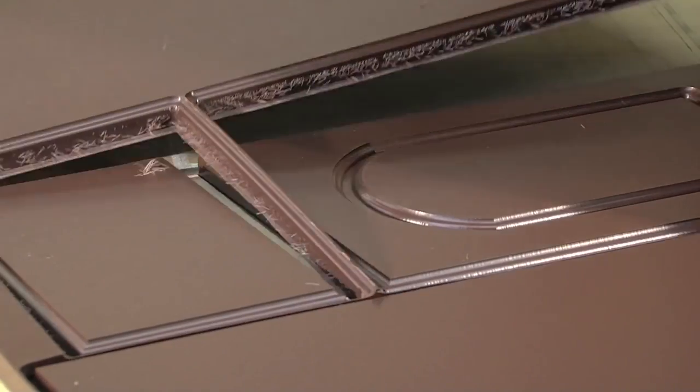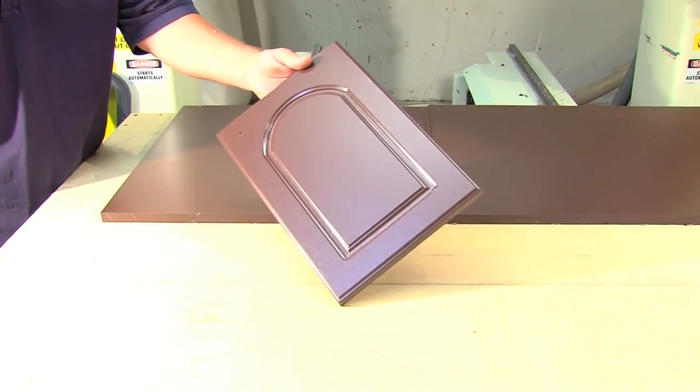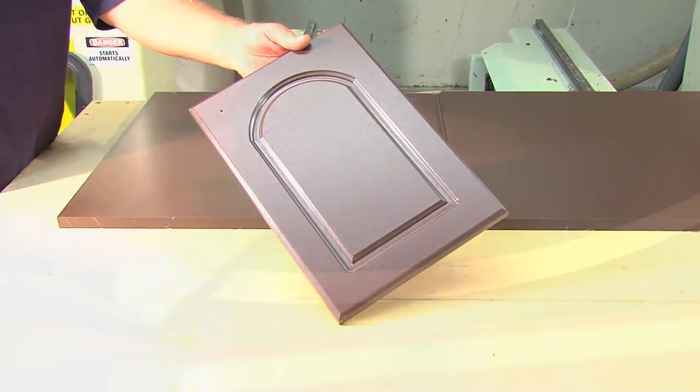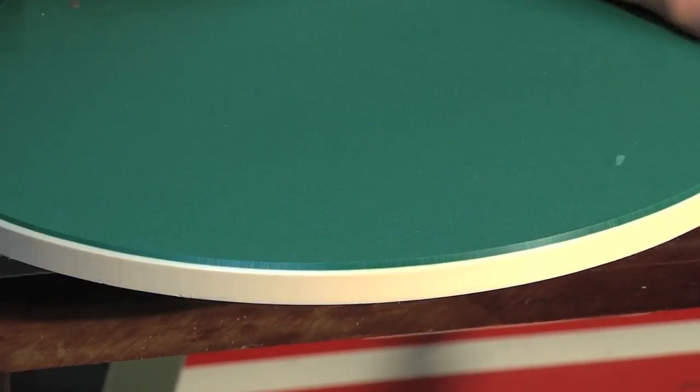You can also edge profile, mill, and engrave polymer sheets when using a CNC router. Hand routers can also be used to form edges, creating a smooth, finished look.